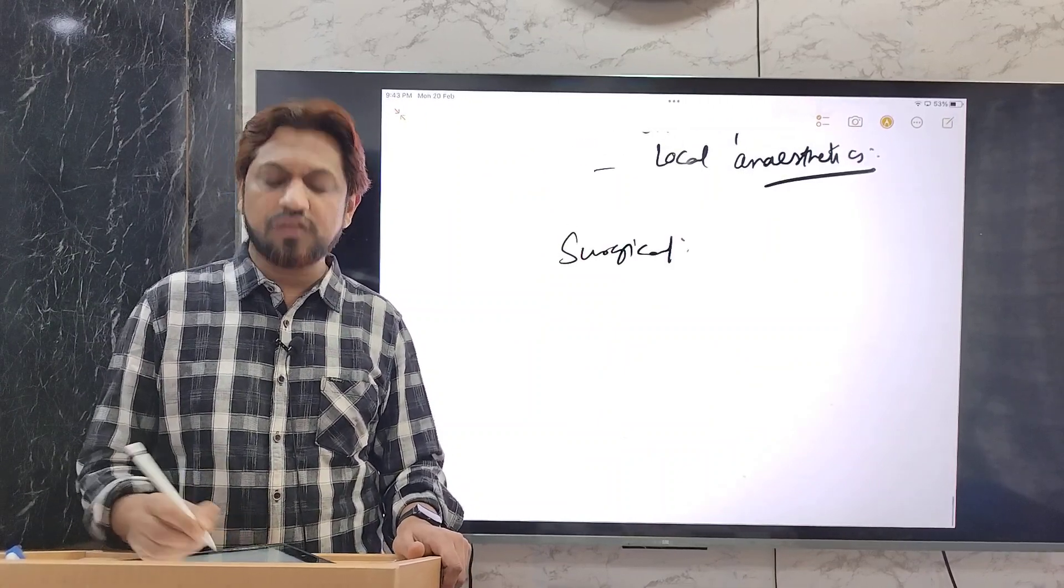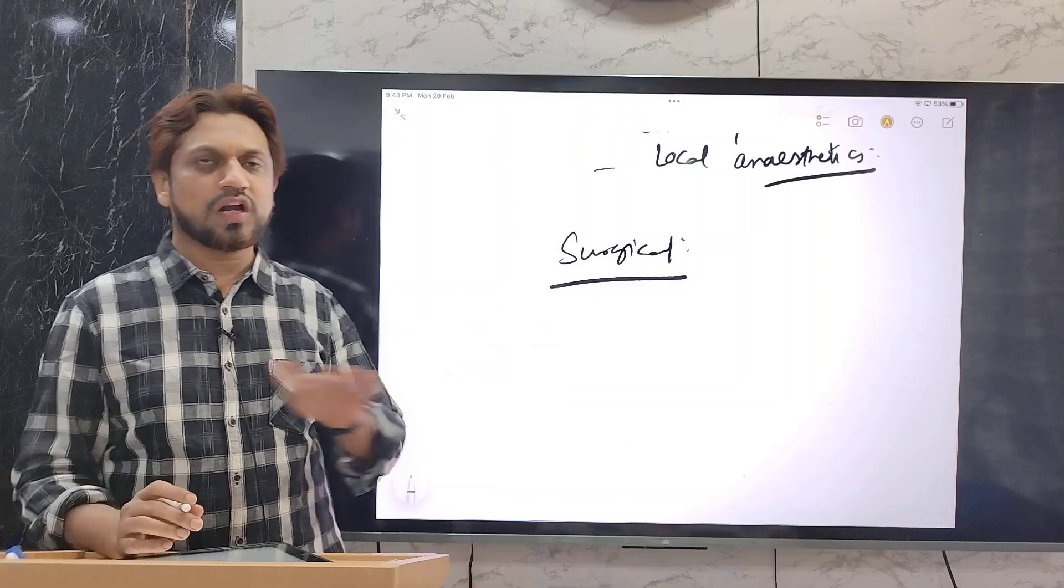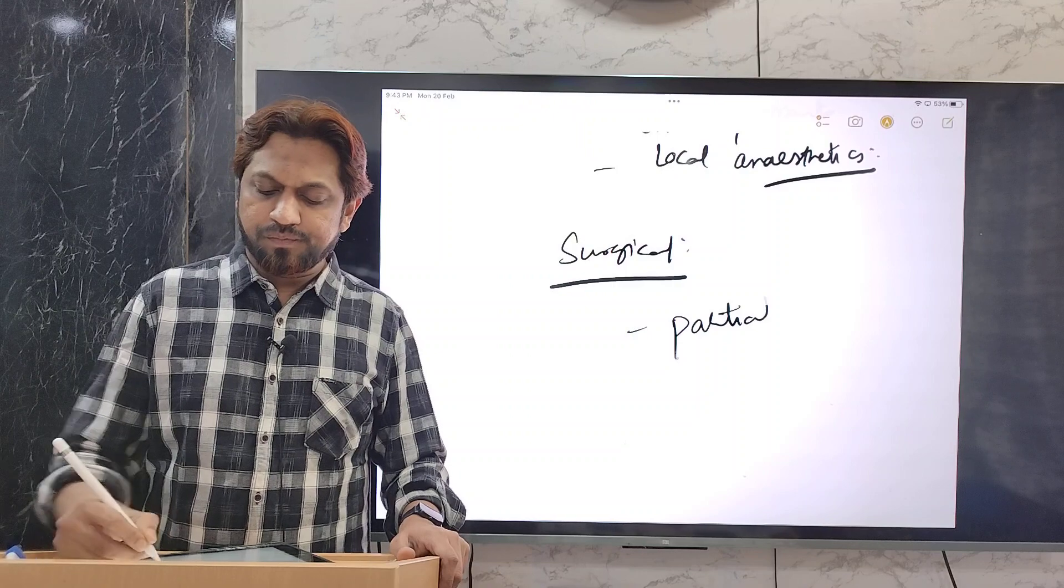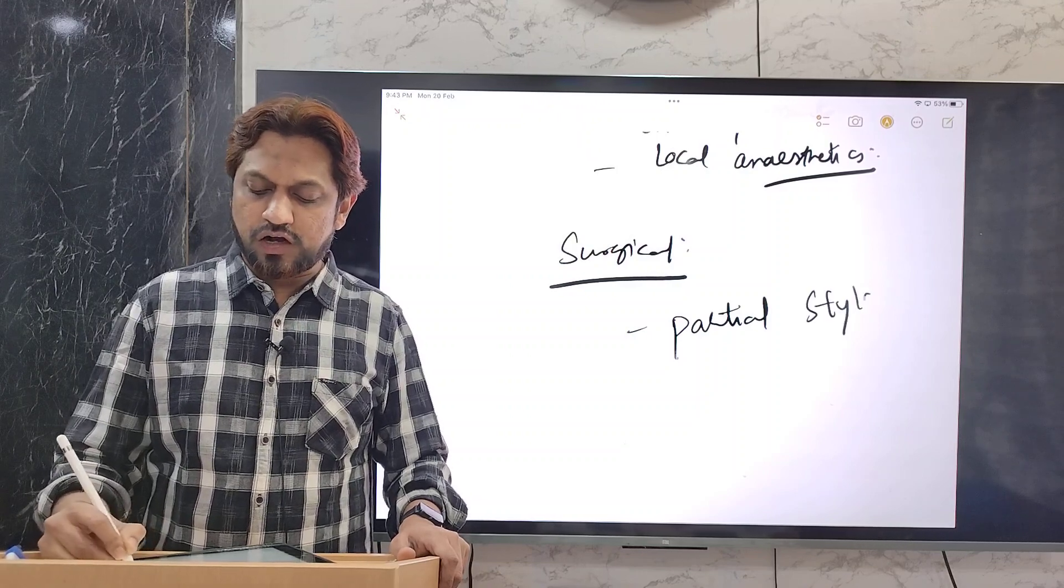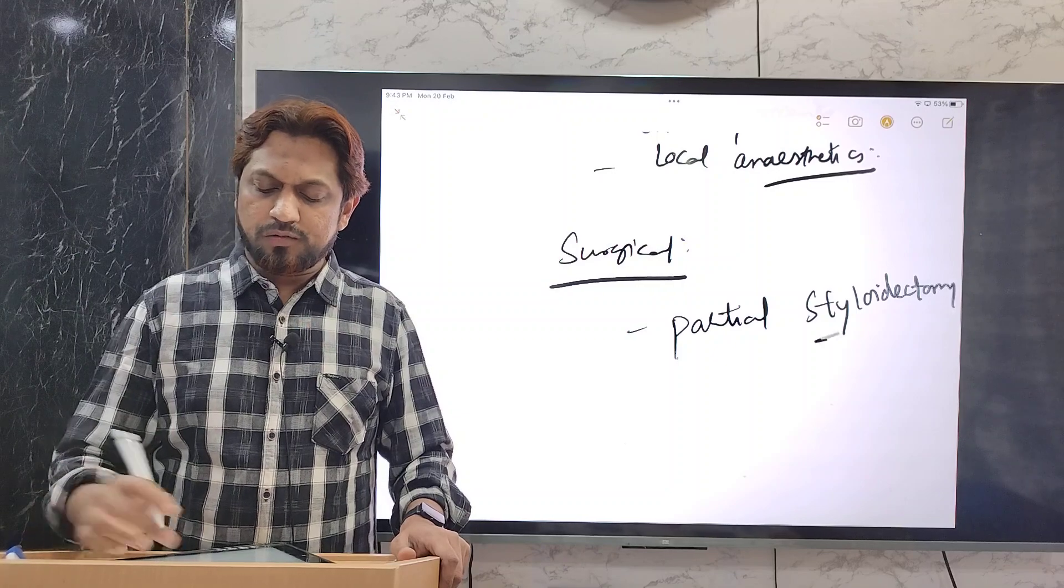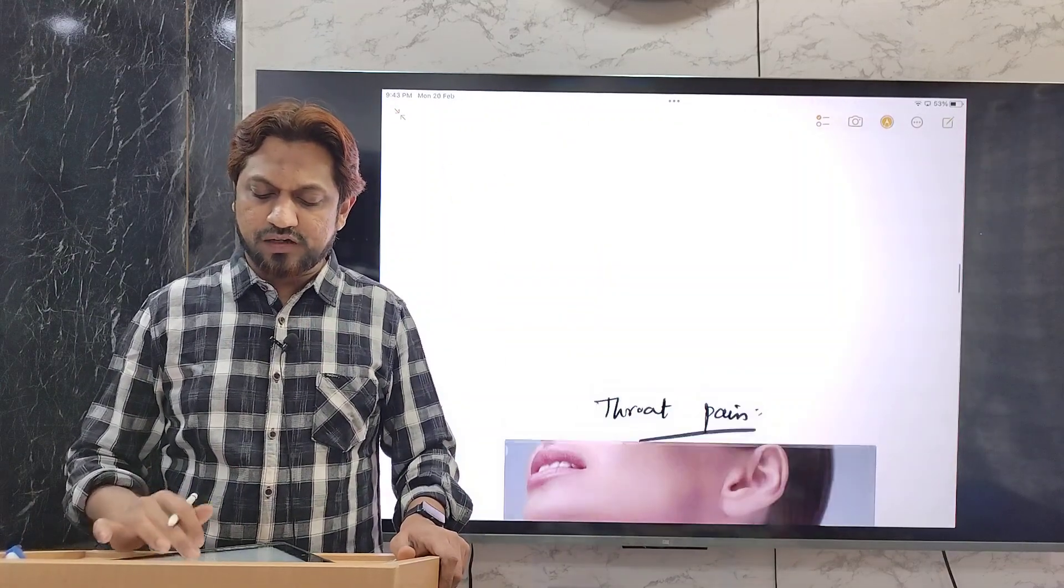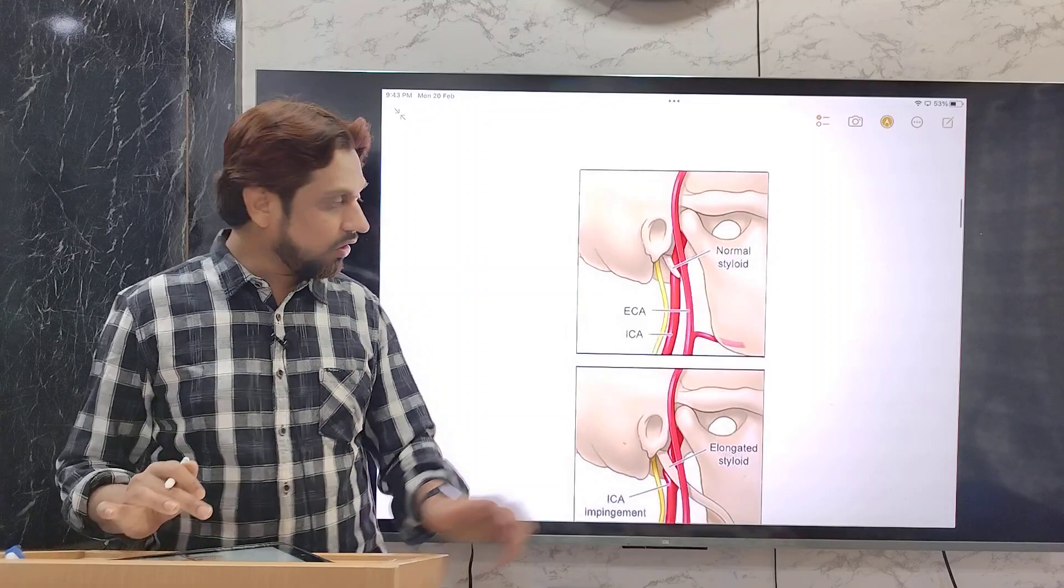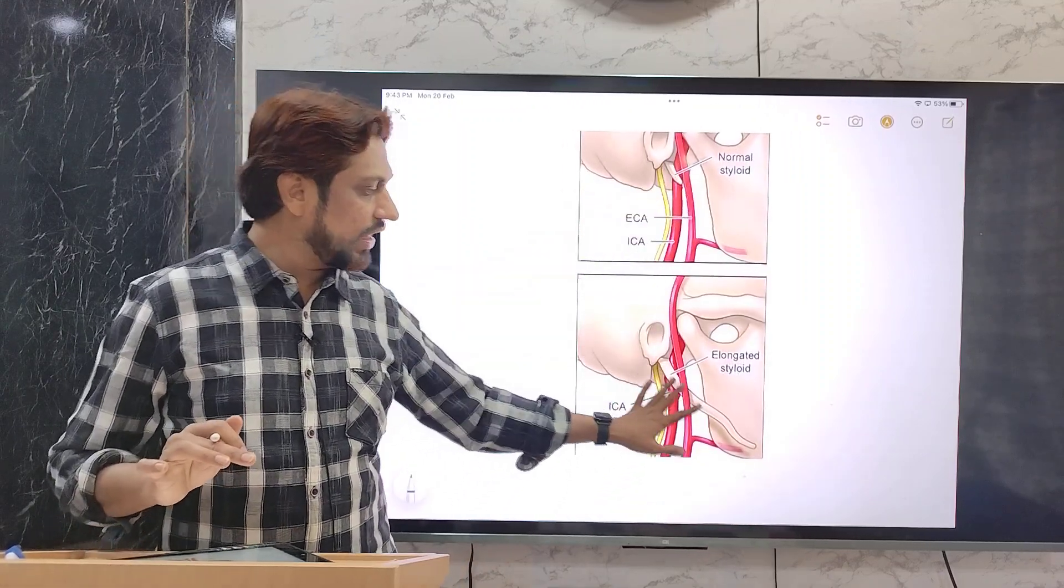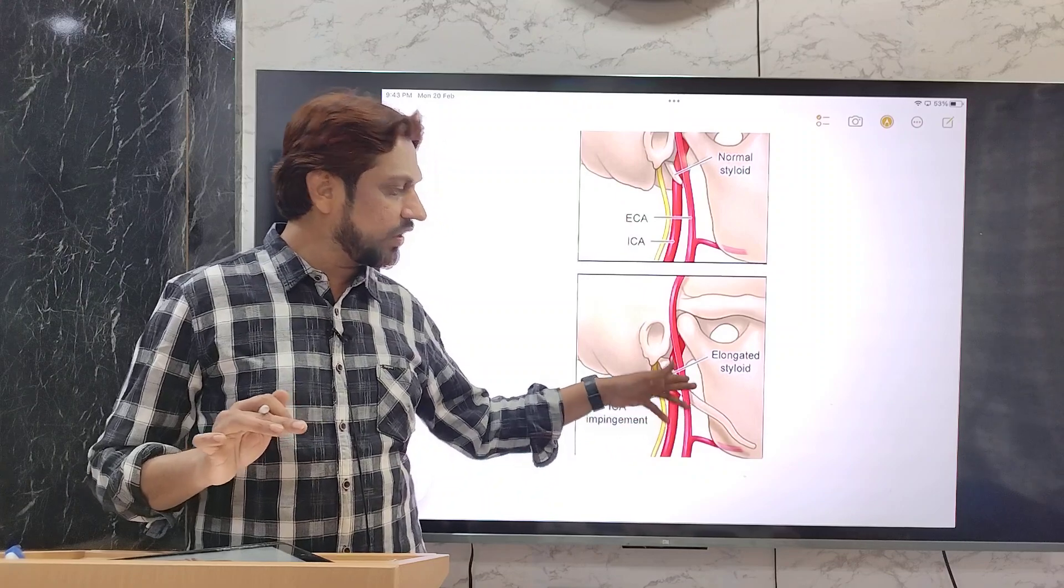Surgical treatment is excise the styloid process, that is, just remove or cut that styloid process, that is, the partial styloidectomy. Partial, not full styloidectomy. In the partial styloidectomy, what exactly it is done is that the extra piece of that styloid process which is enlarged and causing all the signs and symptoms. This is the normal styloid process, this is the enlarged one. This enlarged one is cut.